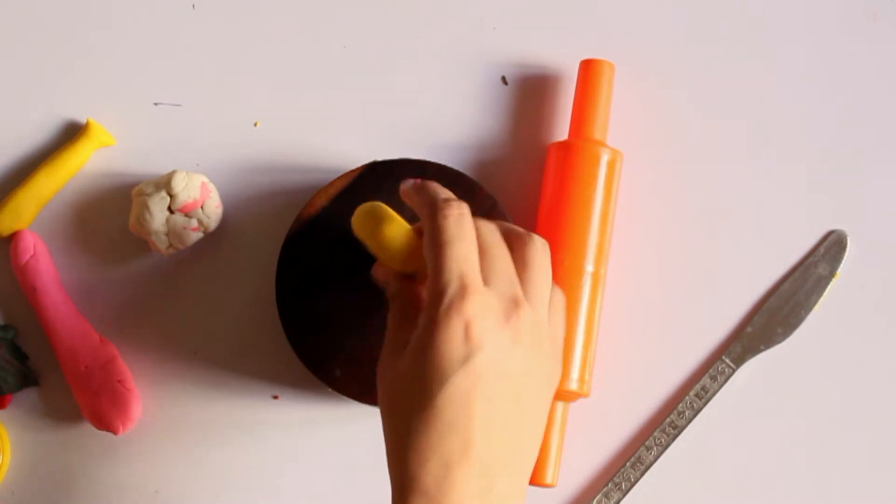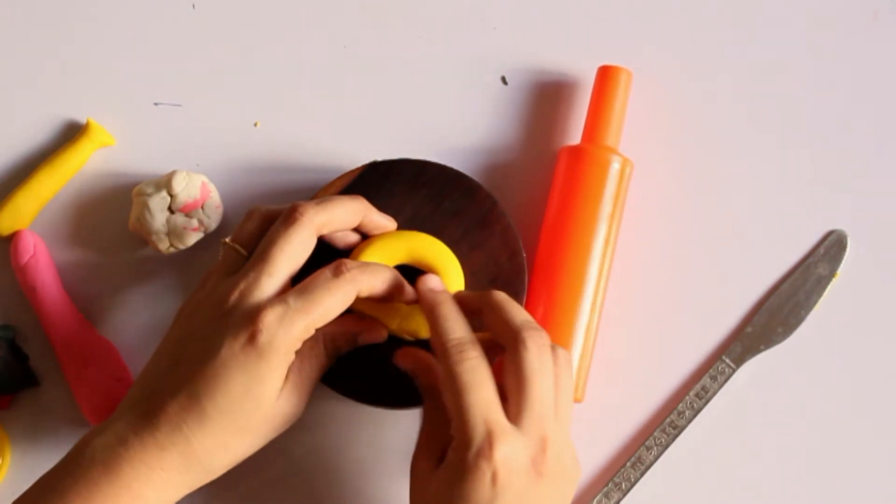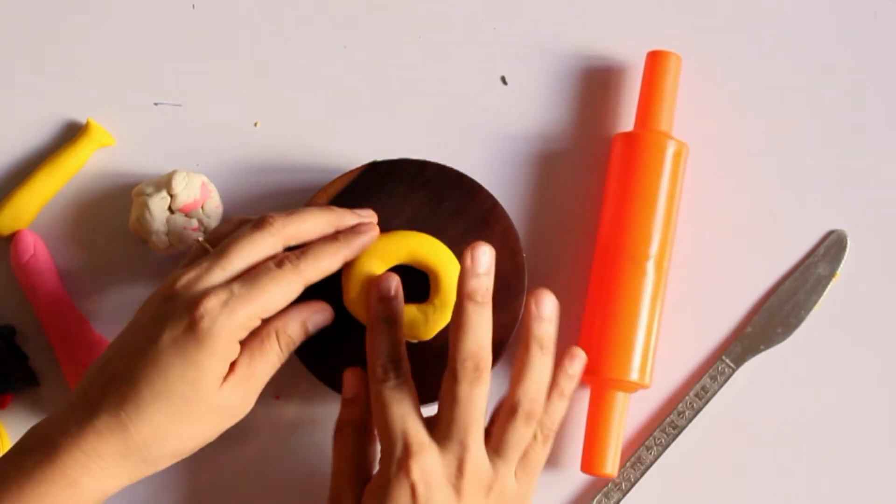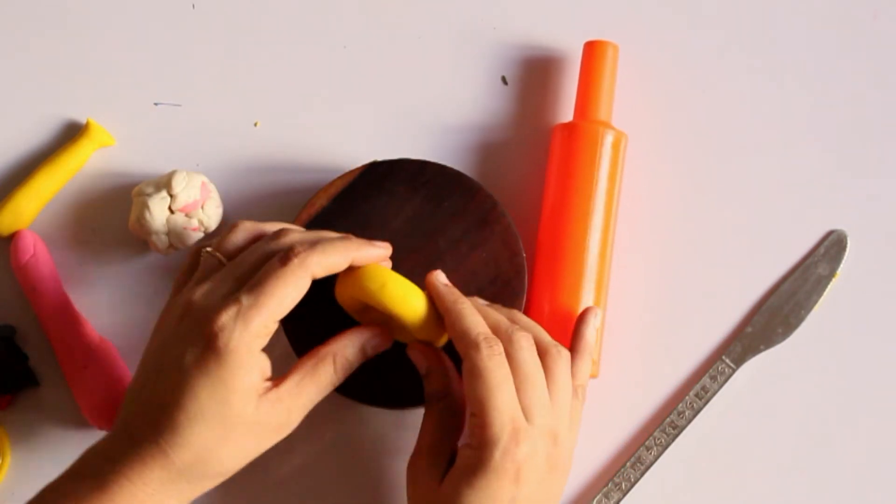You can just smooth in the corners now and your Play-Doh doughnut will be ready. But what is a doughnut without creamy icing?